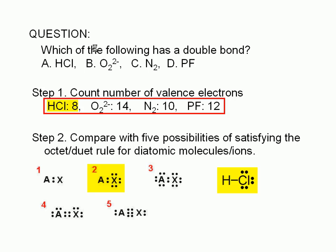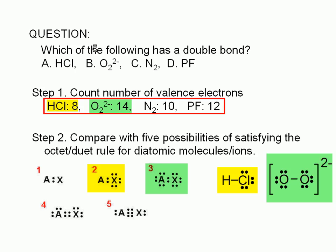We can also see that only structure three has 14 valence electrons. Therefore, we expect the peroxide ion to have this structure. There is a single bond between the two atoms and three lone pairs on both atoms. Note that we must enclose the Lewis structure for peroxide in a square bracket and indicate the charge as a superscript. We need to do this for ions.